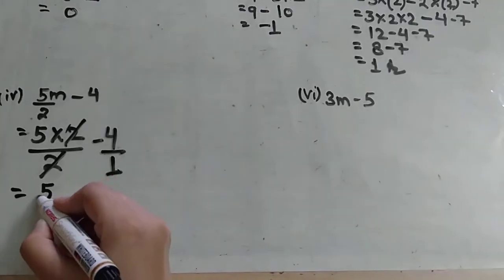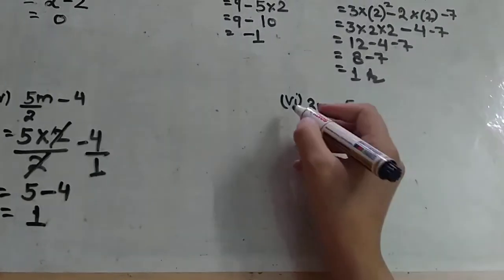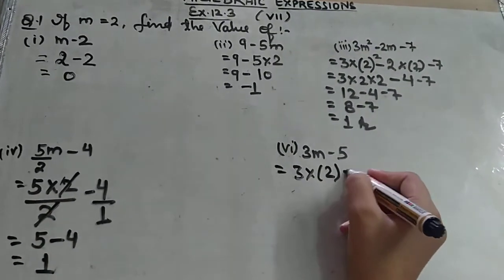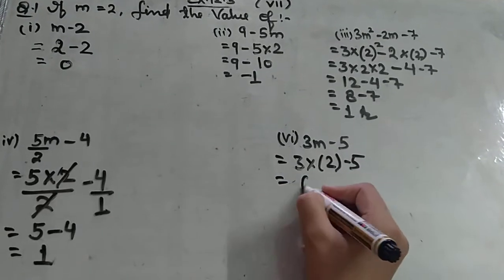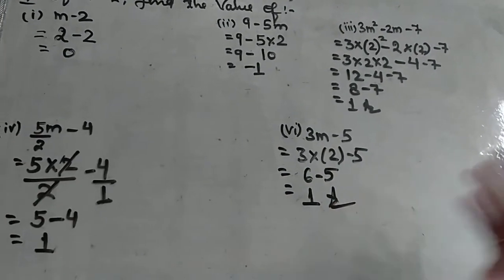So you have 5 minus 4. Here again, 3 multiplied by 2 minus 5. 3 into 2 is 6 minus 5 equals to 1. This is your answer.